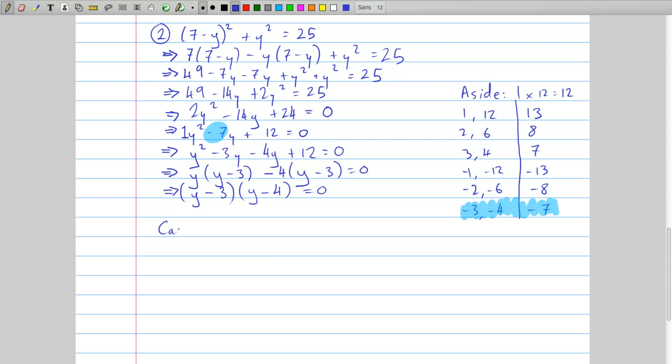Now I solve these, so I get case 1, where y minus 3 equals 0. You say the first bracket equals 0, and you end up with y equals 3. And the other case, where the second bracket, y minus 4 equals 0. And you end up with y is equal to 4.